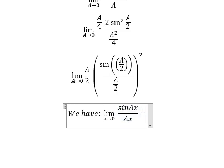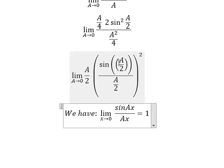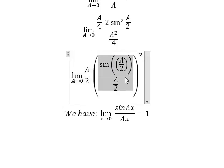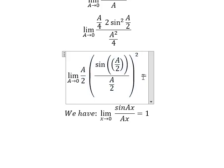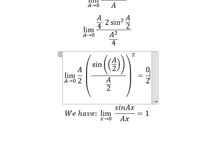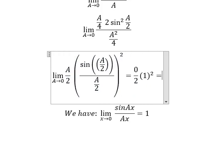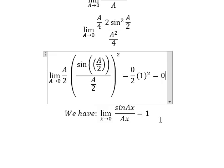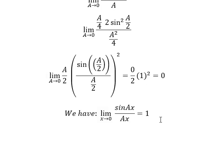This equals number 1 when A approaches zero. So we have 0 over 2 and 1 squared, and this equals number 0. That is the end, thank you for watching.